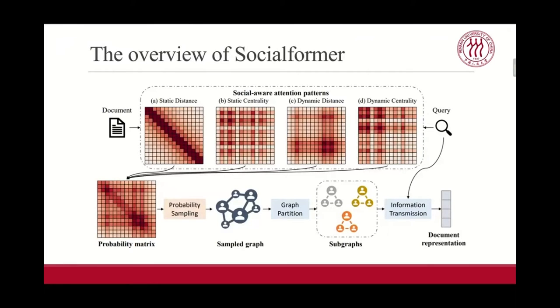The overview of social former is shown in the figure. To build a graph with reasonable remote edges, we incorporate the characteristics of social networks, considering the influence of word distance and word centrality. To facilitate calculations, we segment the whole graph into multiple subgraphs according to the characteristics of friend circles. Then, we design a two-stage information transmission method to simulate the information flow in social scenarios.